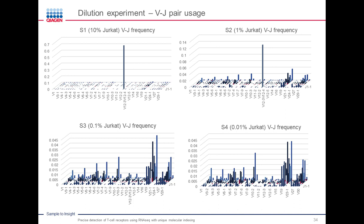A visualization of the T cell receptor landscape shows that at 10% GERCAT, one tall bar dominates the VJ pair plot. At 1%, that dominant bar is still visible but other clonotypes from donor blood begin appearing. At 0.01%, the GERCAT sequence is blended into the background diversity. A normal milliliter of human blood can contain anywhere from 1,000 to 10,000 different clonotypes, depending on the person's health status and exposure history.